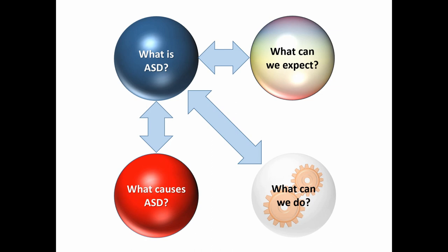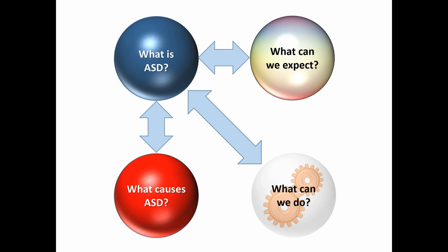As I outlined in the initial post, this series will cover four broad areas: first, what is Autism Spectrum Disorder? Second, what causes ASD? Third, what can we expect? And fourth, what can we do?